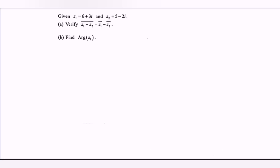Hello everyone, in this video I'm going to discuss an example for complex numbers. Given z sub 1 equals 6 plus 3i, and z sub 2 equals 5 minus 2i.